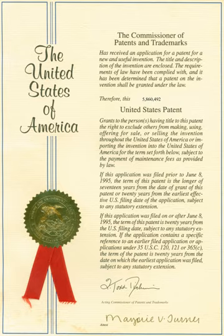The Statute became the foundation for later developments in patent law in England and elsewhere. Important developments in patent law emerged during the 18th century through a slow process of judicial interpretation of the law. During the reign of Queen Anne, patent applications were required to supply a complete specification of the principles of the invention for public access. Legal battles around the 1796 patent taken out by James Watt for his steam engine established the principles that patents could be issued for improvements of an already existing machine.